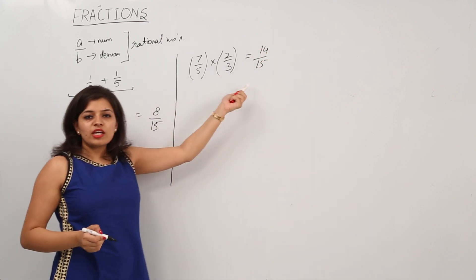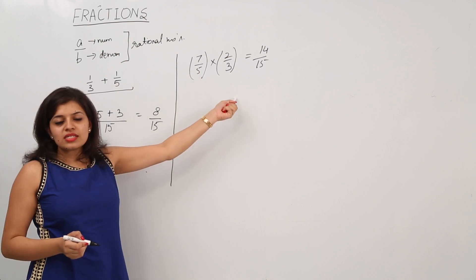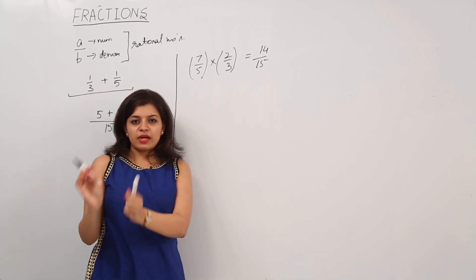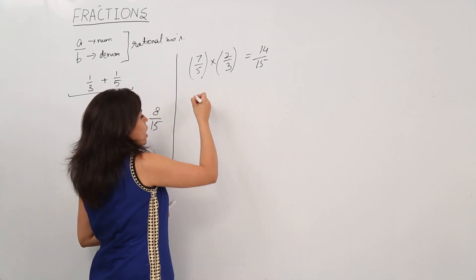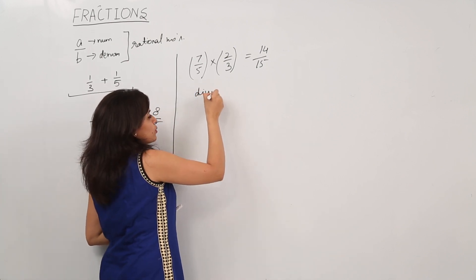So the answer of multiplication of 2 rational numbers is multiply the numerator by the respective numerator and the denominator by the respective denominator. Now how do we divide 2 rational numbers?